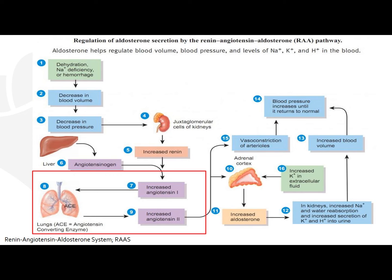Then angiotensin 1 is converted to angiotensin 2 by angiotensin-converting enzyme. One of our main drug classes, called the ACE inhibitors, acts on the angiotensin-converting enzyme to inhibit that conversion, and so it does not allow for the production of angiotensin 2.